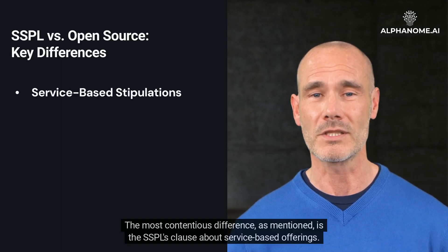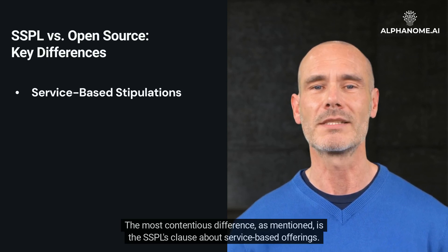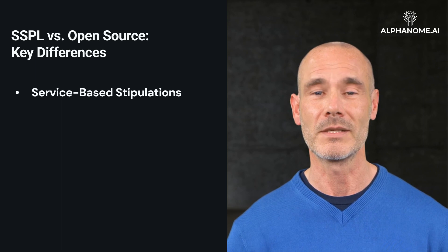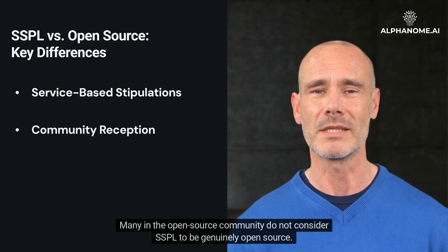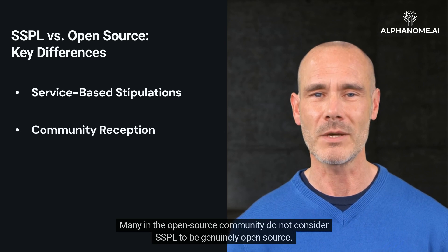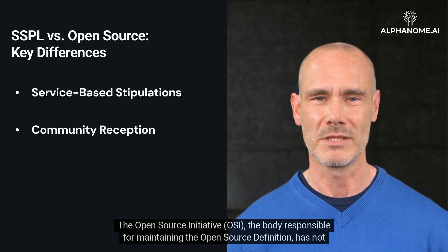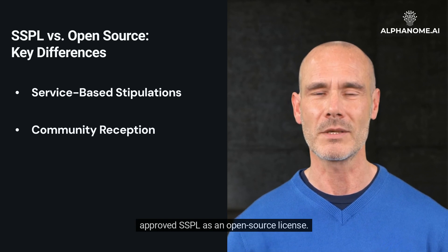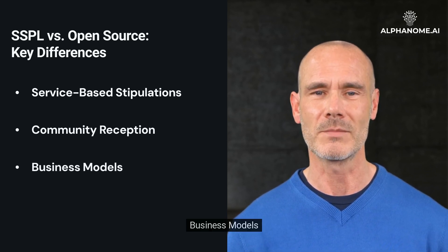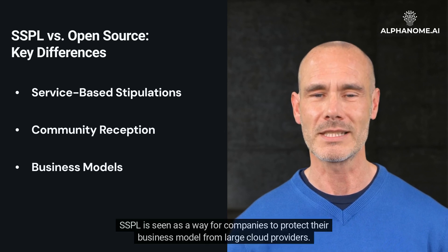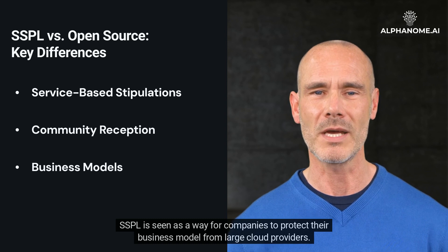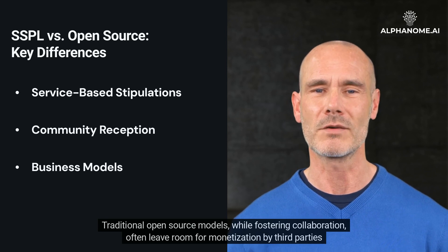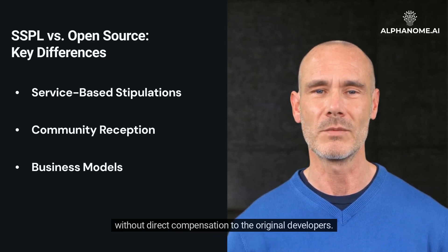The most contentious difference is the SSPL's clause about service-based offerings. Traditional open source licenses don't have such provisions. Community reception: many in the open source community do not consider SSPL to be genuinely open source. The Open Source Initiative, OSI, the body responsible for maintaining the open source definition, has not approved SSPL as an open source license. Business models: SSPL is seen as a way for companies to protect their business model from large cloud providers. Traditional open source models, while fostering collaboration, often leave room for monetization by third parties without direct compensation to the original developers.